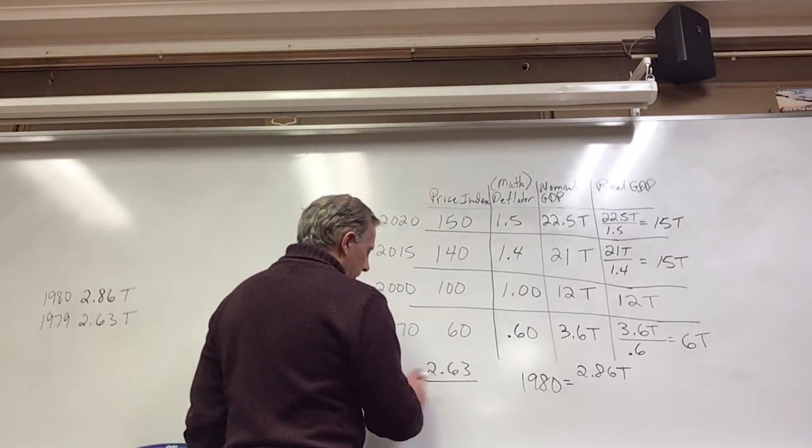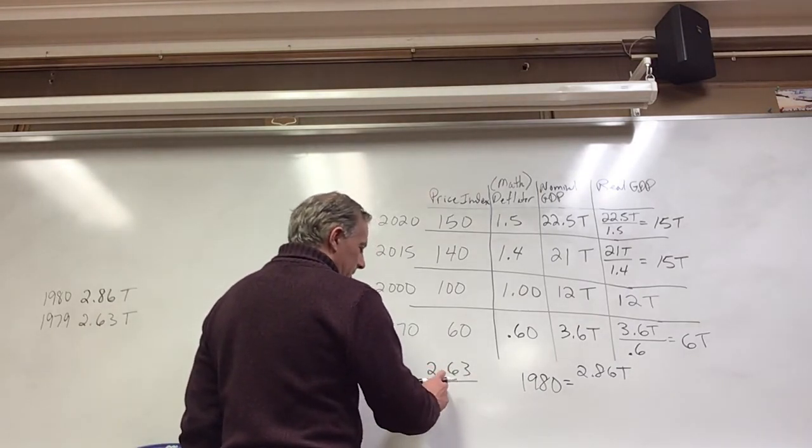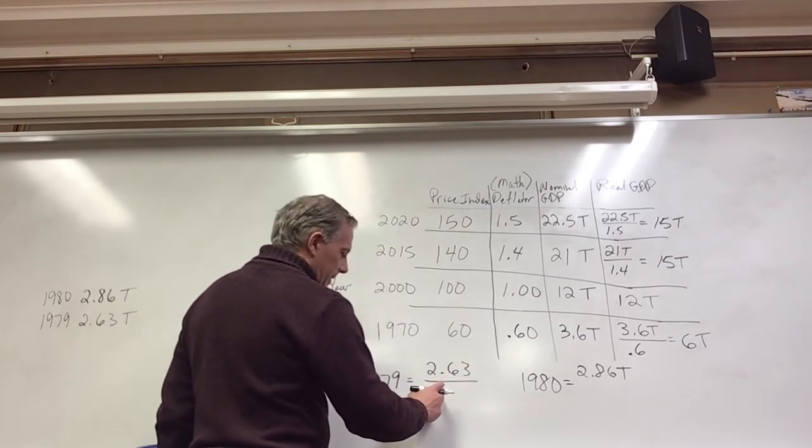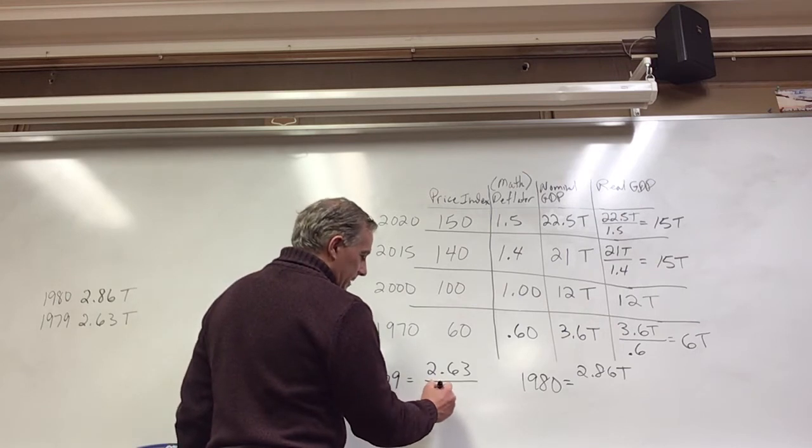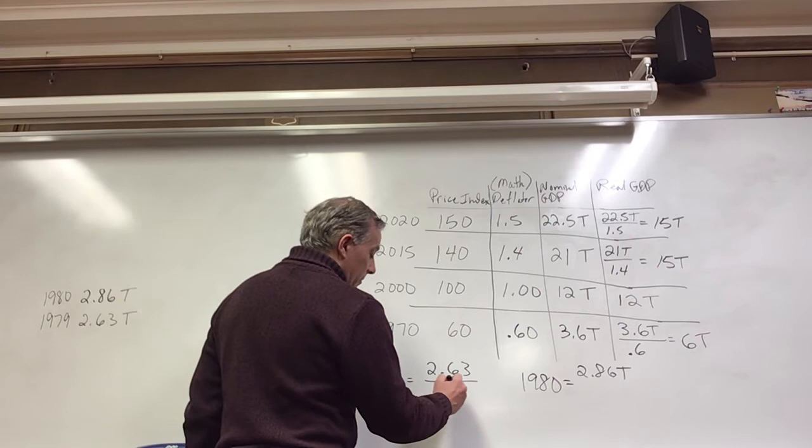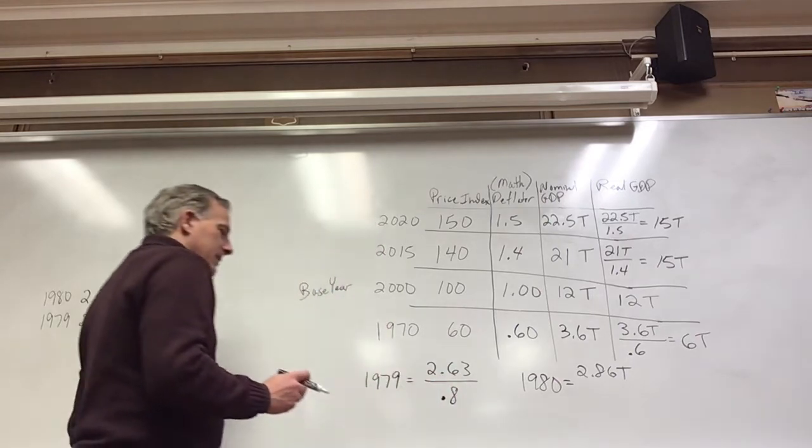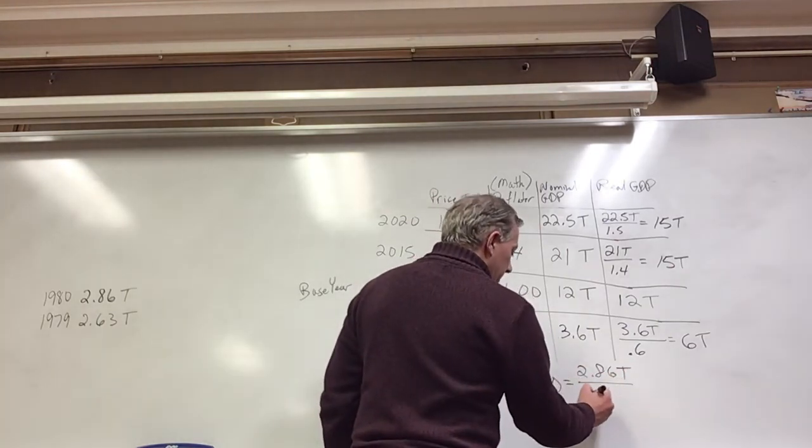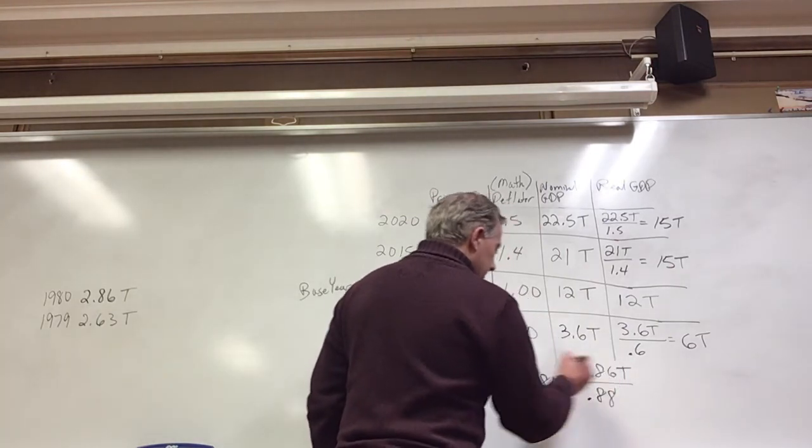So I'm going to just make 1979 my base year. That's okay. We'll make it a little bit funkier. We'll say that the price index here is 80%, which is 0.8. And then if it's 10% inflation year over year, this one would be 0.88.